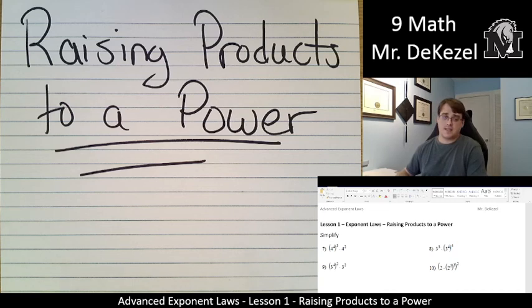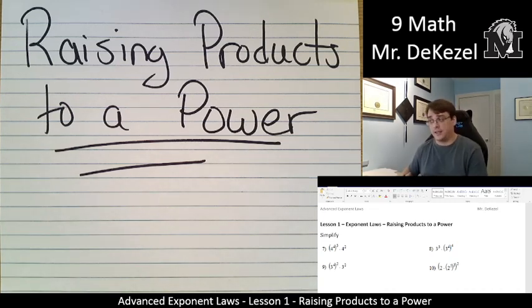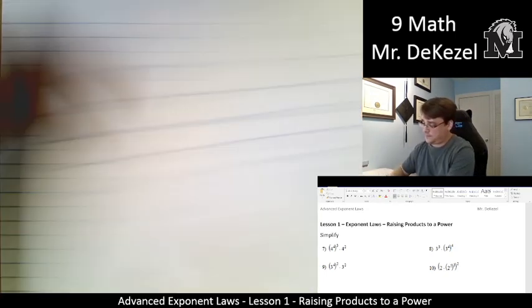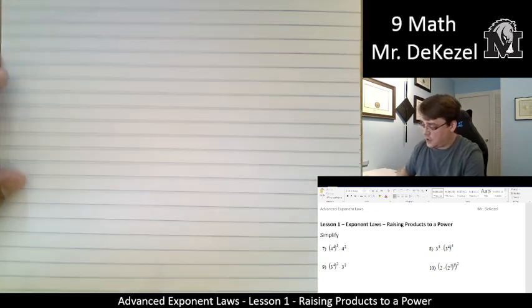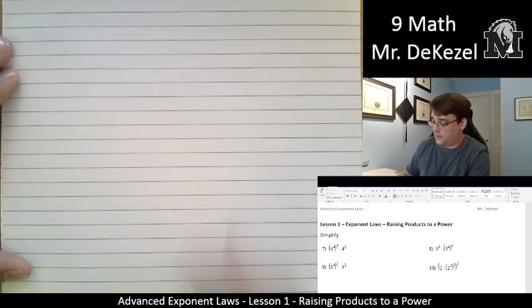This one is raising products to a power. Essentially we're going to be multiplying numbers of the same base, but they also have exponents involved as well. Alright, let's go.